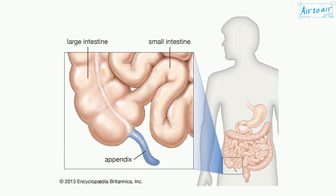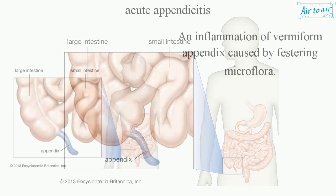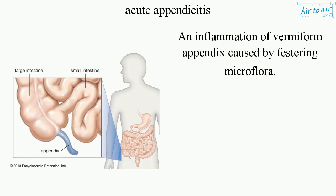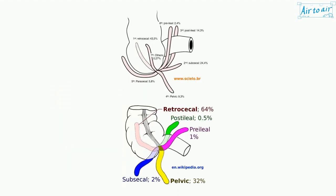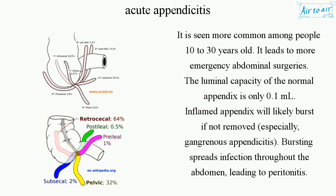Acute appendicitis. An inflammation of the vermiform appendix caused by festering microflora. It is seen more commonly among people 10 to 30 years old, and it leads to more emergency abdominal surgeries than any other condition.